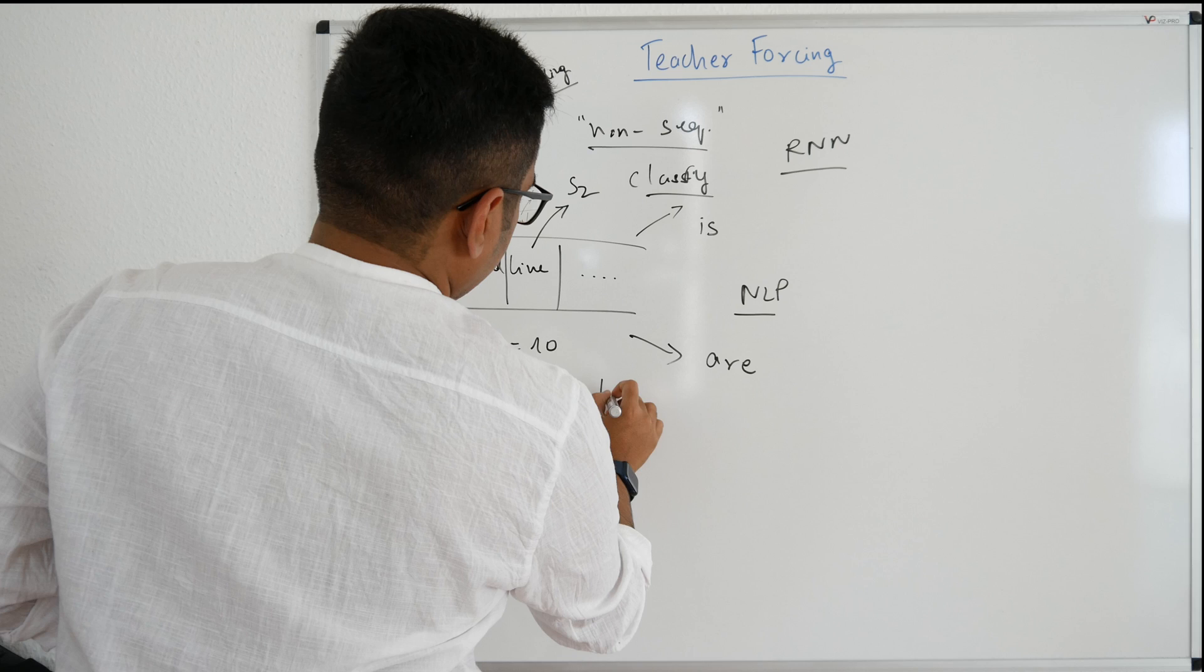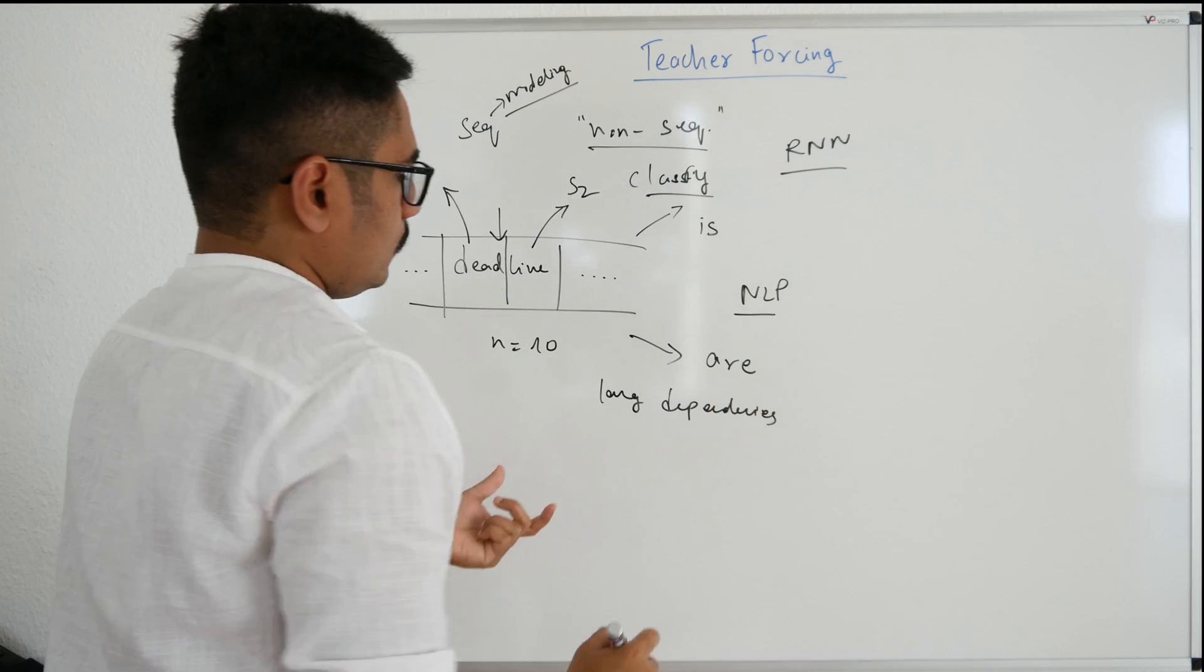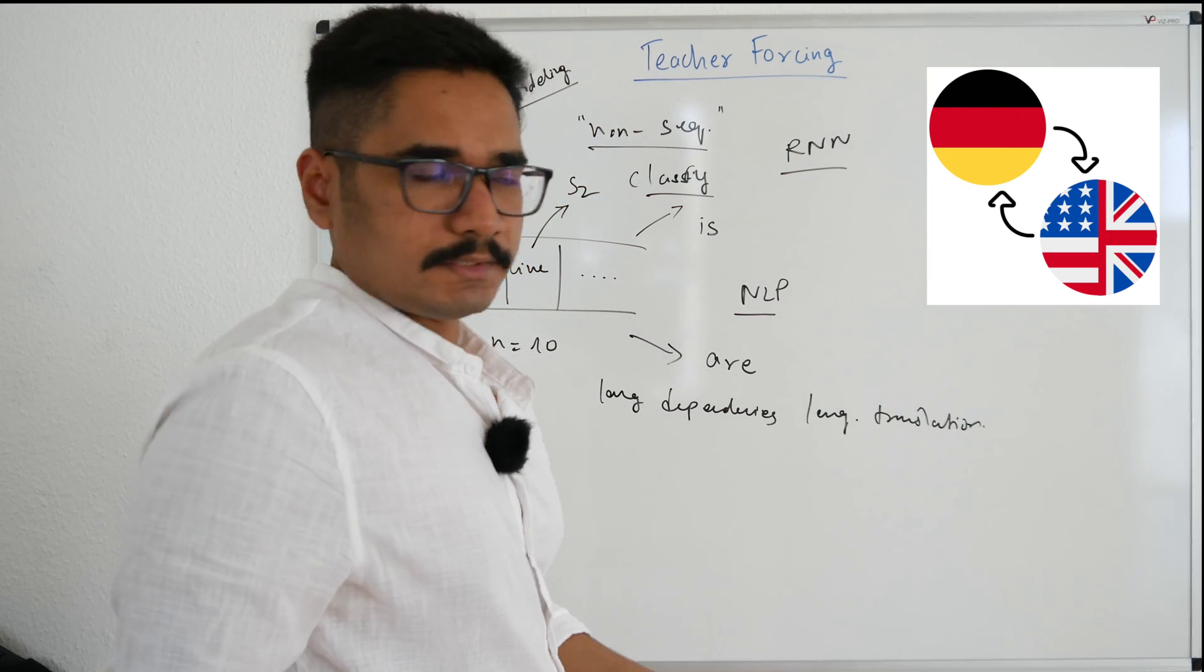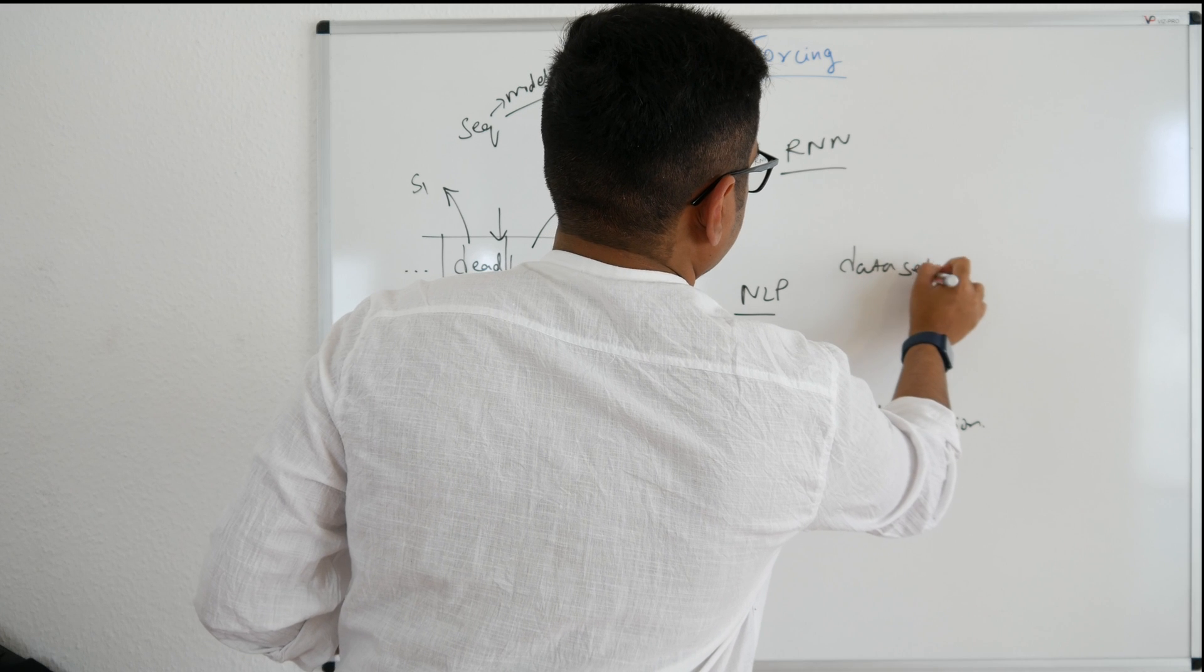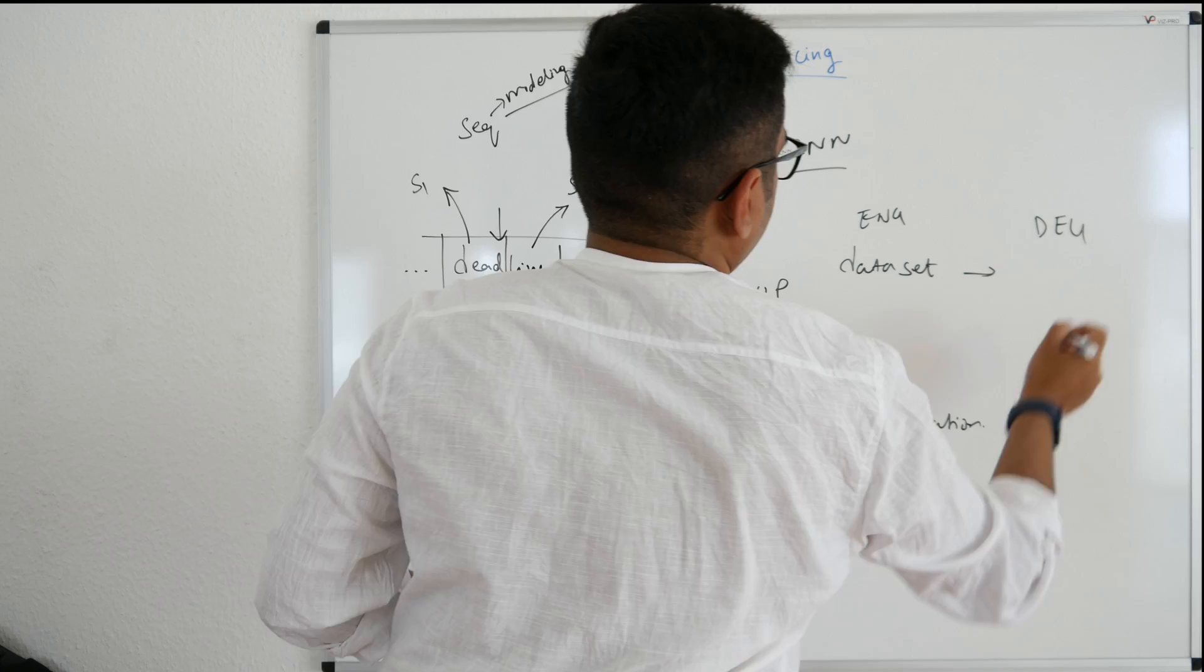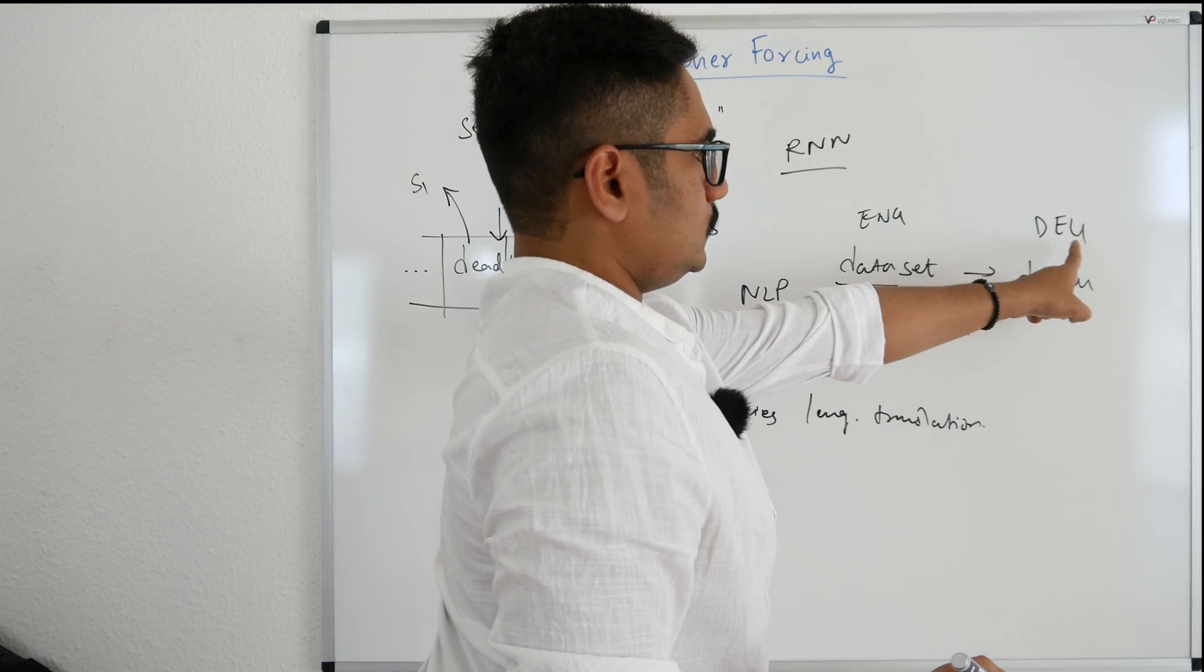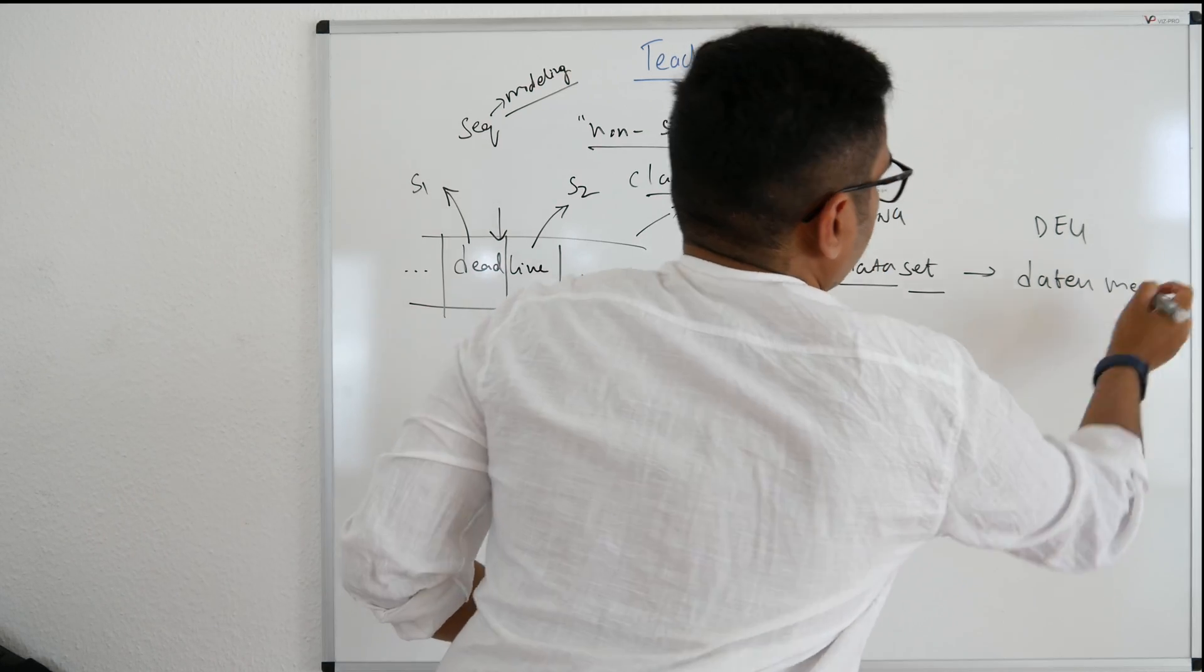Especially we can see like language dependencies, or say for example you are doing some language translation, like German to English something like that. For example in English you have 'dataset'. This is in English, and now in German you want to convert this. See for example this data is called 'daten' in German, that is Deutsch, and set is called 'manga'.